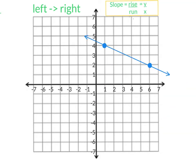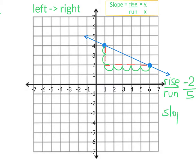We're going to do the next example, and I observe that instead of rising, we are actually going to be going down. We're going to go down one, two. So instead of rising, I'm going down two, so I'm going to write a negative two. And from here, we're going to go one, two, three, four, five to the right. The running is always to the right. So our slope here is negative two-fifths. Notice that when the slope is negative, it tilts to the left, as this line has.